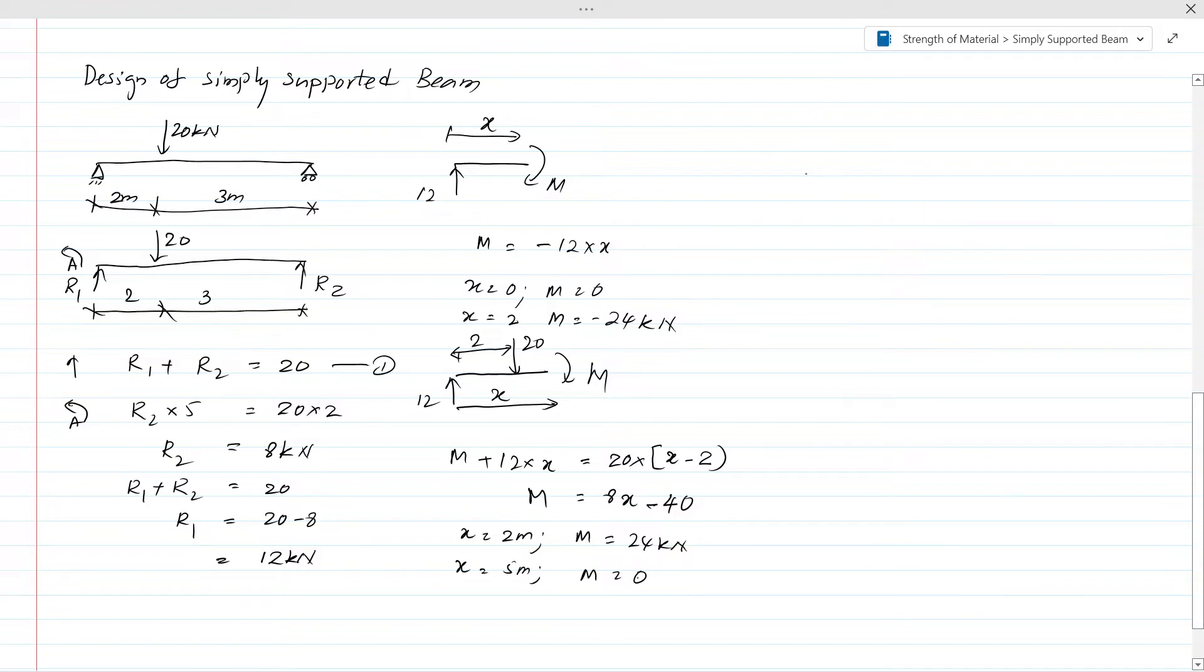Before drawing the bending moment diagram, let's calculate the shear force. Considering vertical equilibrium, the shear force equals 12kN. There is no variation until the point load, so the shear force remains constant at 12kN.